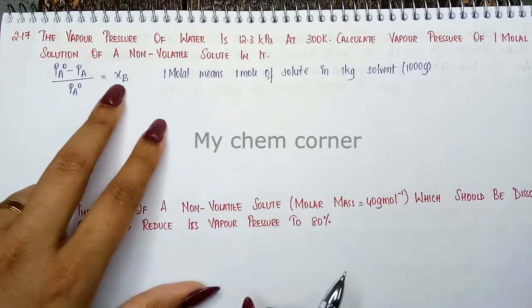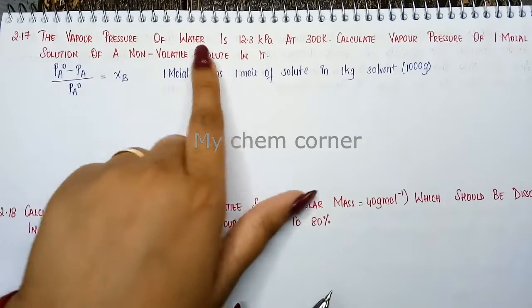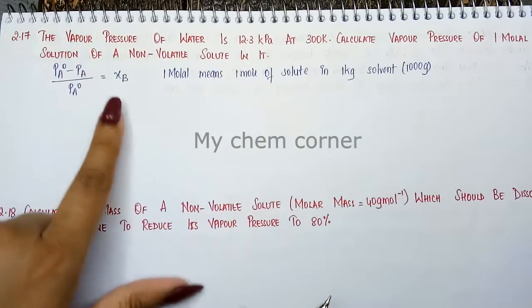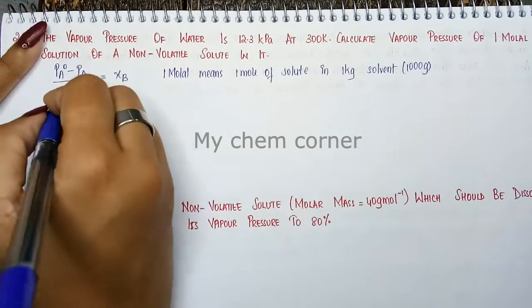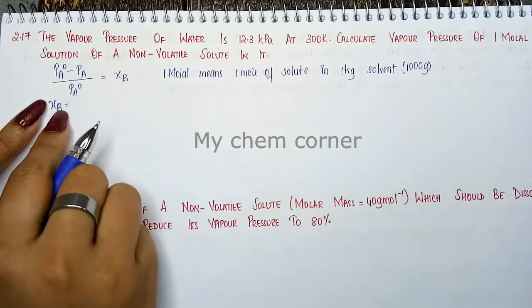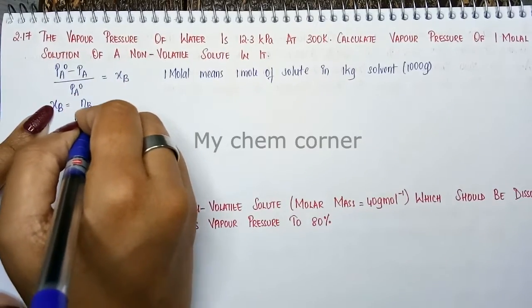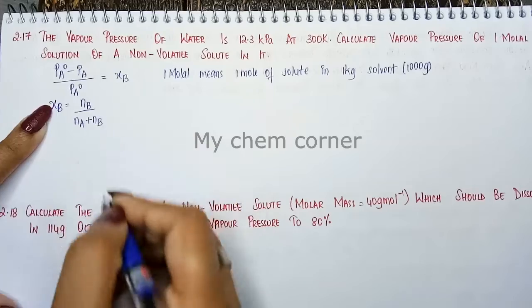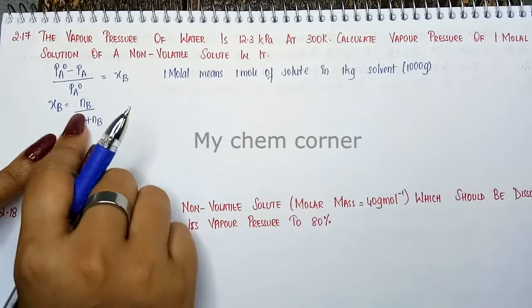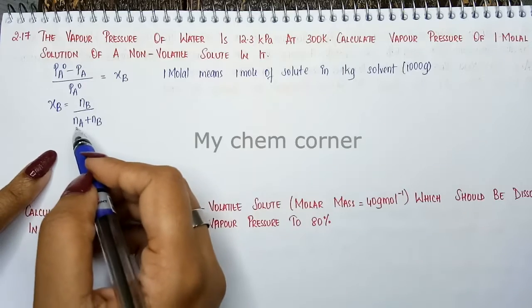Now here X_B is given, but that is not given to us in the question anywhere directly. So let's solve X_B first. X_B is nothing but mole fraction of the solute. If it is mole fraction of the solute, then it is going to be N_B by N_A plus N_B, which is the number of moles. Number of moles is also not given to us directly, so we are going to calculate it.